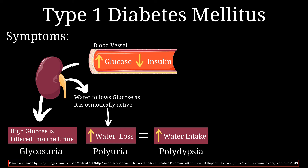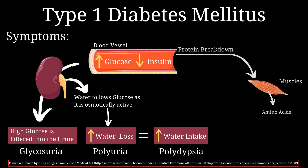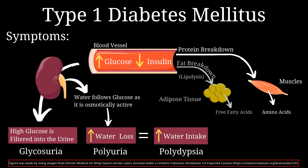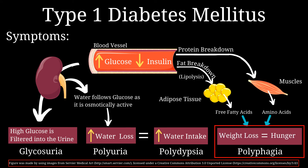Let's move on to symptoms related to low insulin levels. Even when glucose levels are high in the blood, cells cannot use glucose for energy because of low insulin. So cells starve for energy, and in response protein breakdown occurs in the muscles to release amino acids, and fat breakdown occurs in the adipose tissues to release free fatty acids — both of which can be used to generate energy. This eventually leads to weight loss, causing the patient to feel hungry and eat more food, a symptom called polyphagia.